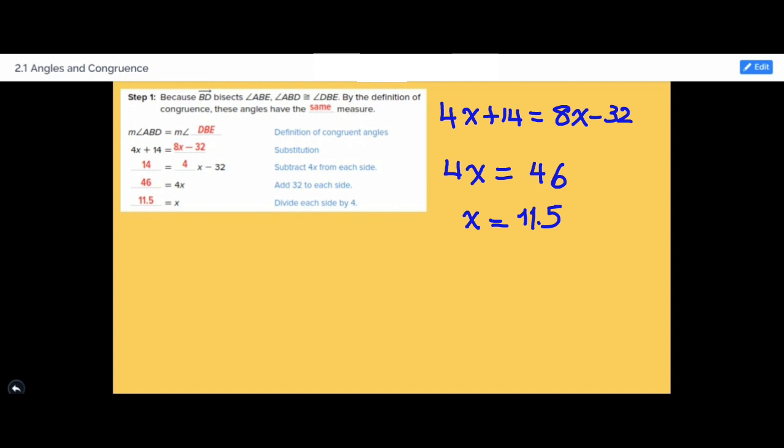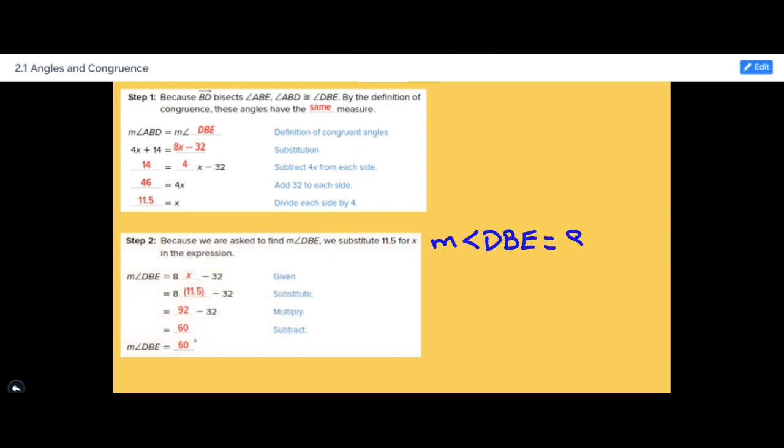Then step number 3, we're going to substitute x inside measure of angle DBE. So we're going to multiply 8 times the value of x minus 32.